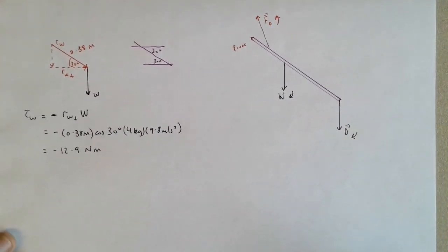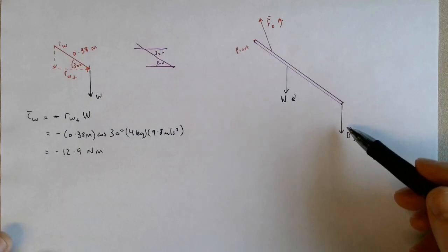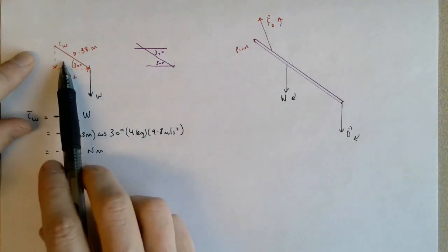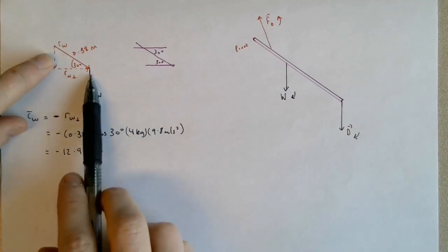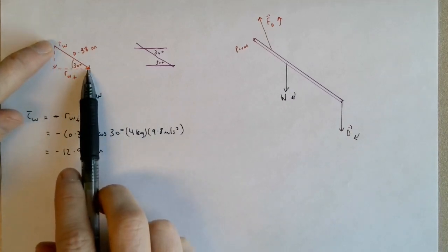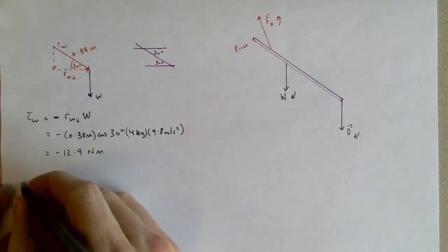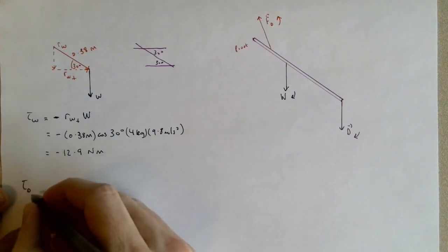Now if I drew a diagram for the dumbbell force, it would be almost identical to the diagram I've drawn for the weight force. So just to save some room here, the only difference would be that the size of R for the dumbbell would be 0.85, the full length of the arm. So the torque due to the dumbbell...